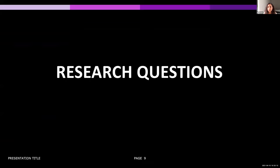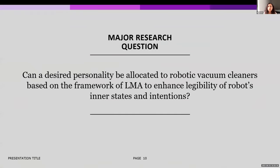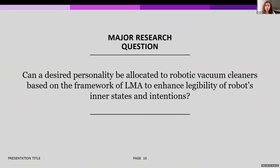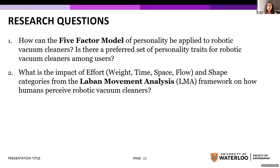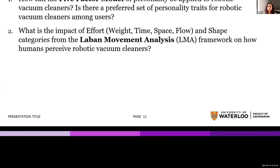Based on the literature review, I developed two main research questions. The major question: can a desired personality be allocated to robotic vacuum cleaners based on the Laban Movement Analysis framework to enhance legibility of robots' inner states and intentions? Sub-questions address how the five-factor model of personality can be applied to robotic vacuum cleaners, whether there is a preferred set of personality traits, and the impact of effort and shape categories on human perception.